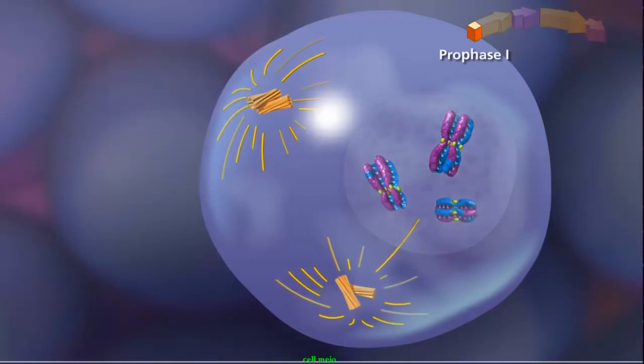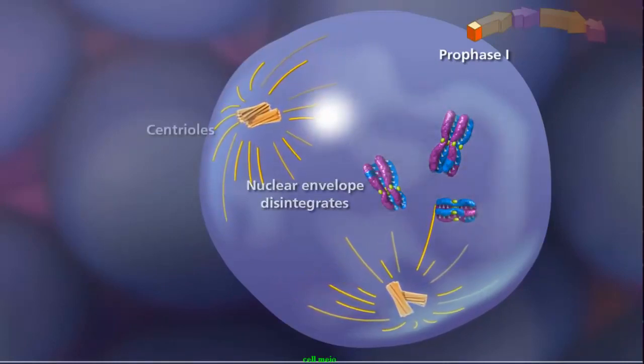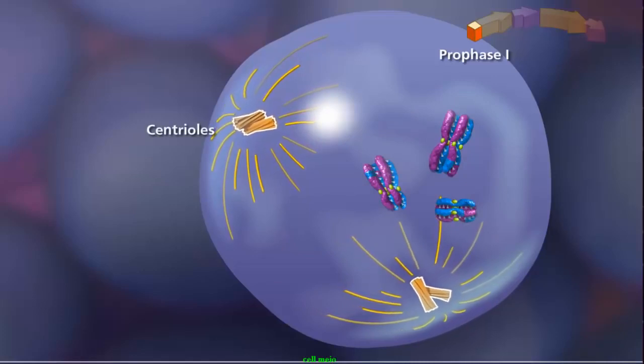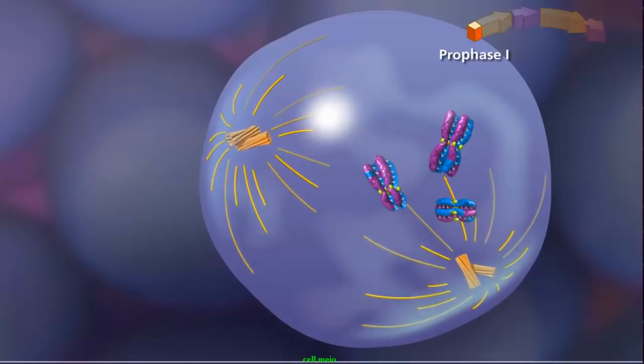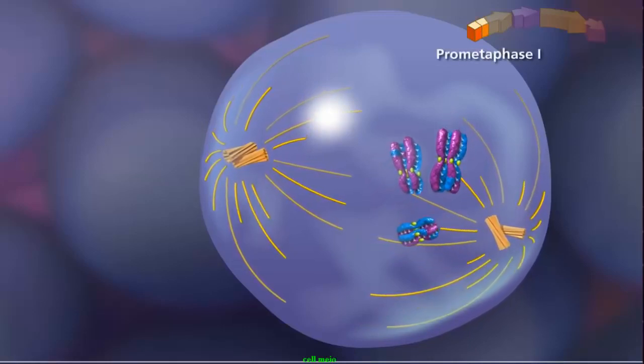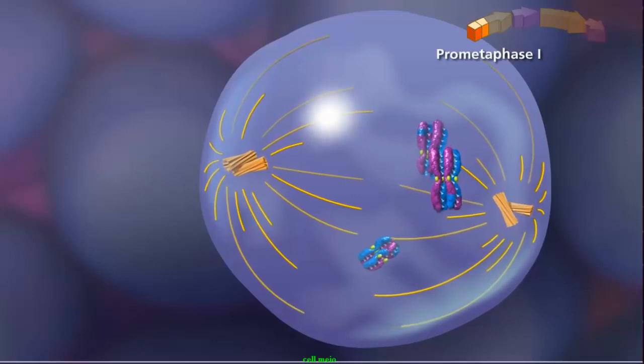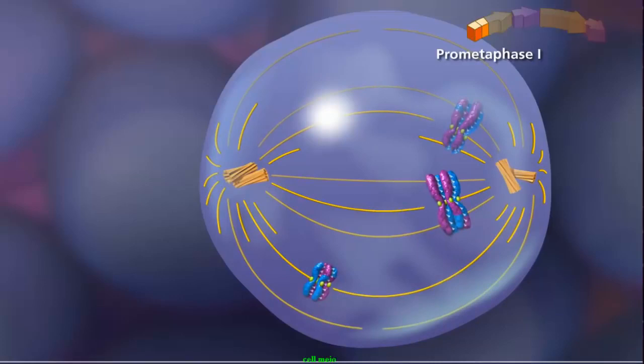Prophase I concludes with the fragmentation of the nuclear envelope as the duplicated centriole pairs move to opposite poles of the cell. As they move, the centrioles extend spindle fibers, forming the meiotic spindle. In prometaphase I, with the paired centrioles in place, the meiotic spindle is fully formed. The sister chromatids attach to the spindle fibers by their kinetochores.